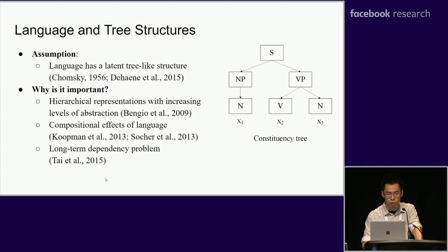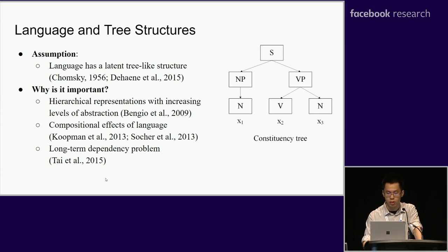Meanwhile, we also want to use this tree structure to model the compositional effect of natural language to solve difficult natural language understanding tasks, such as natural language inference. For natural language generation, the tree structure will help with the long-term dependency problem by providing a shortcut for both information and the gradient.